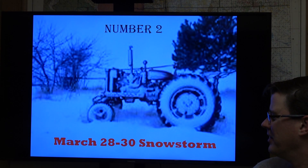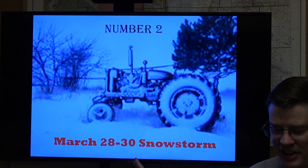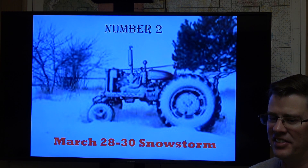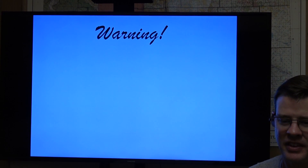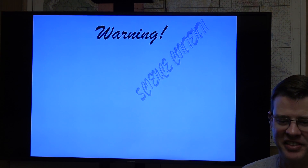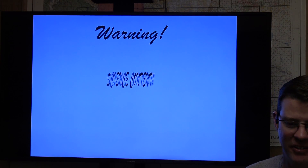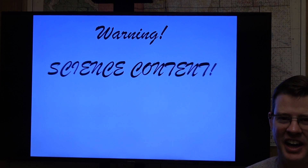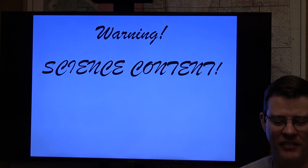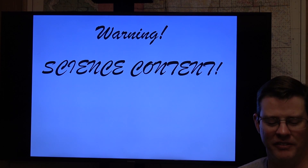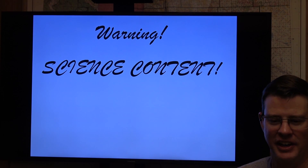The snowstorm that occurred from March 20th all the way through March 30th, affecting especially areas east of the divide. I want to go into a little bit of science content here. This isn't going to be really heavy-duty science content, not college level by any means, but just some basic things that meteorologists look for when they're trying to forecast if some areas are going to get a lot of snow.